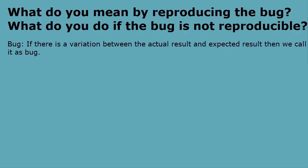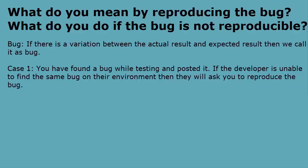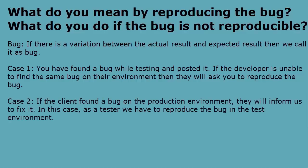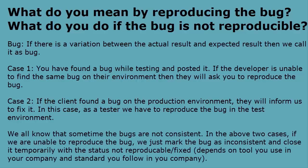Now let's see what is reproducing the bug. Case 1: you have found a bug while testing and posted it; if the developer is unable to find the same bug on their environment, they will ask you to reproduce the bug. Case 2: if the client found a bug on the production environment, they will inform us to fix it — as a tester, we have to reproduce the bug in the test environment. Sometimes bugs are not consistent. In the above two cases, if we are unable to reproduce the bug, we just mark the bug as inconsistent or close it temporarily with the status 'not reproducible' or 'fixed'.